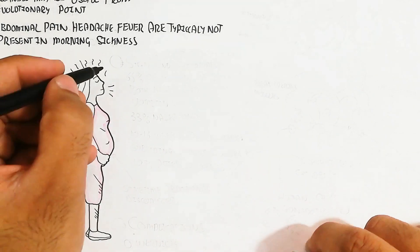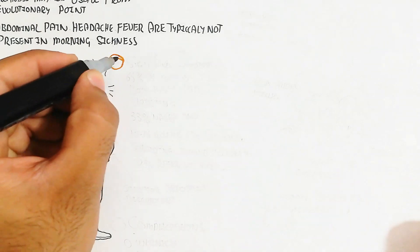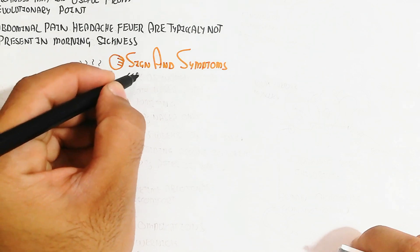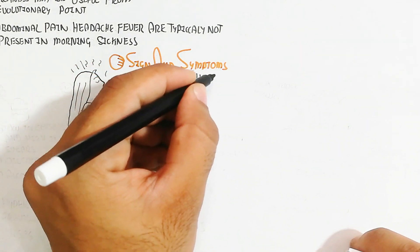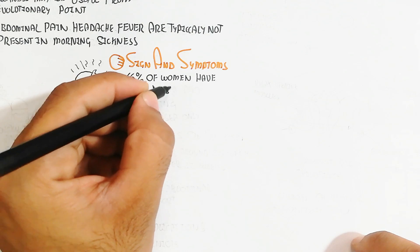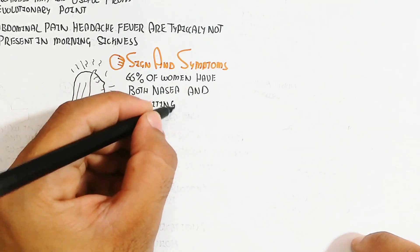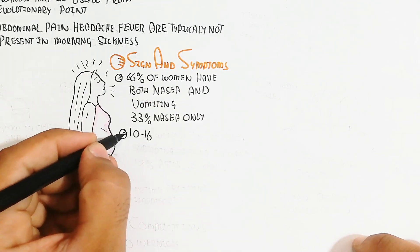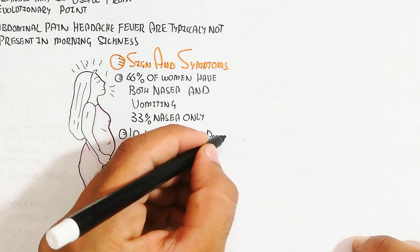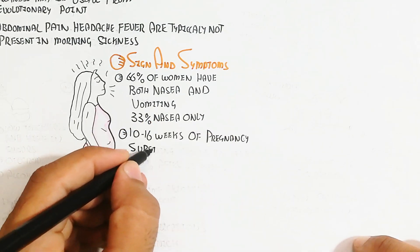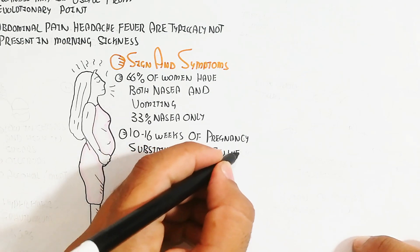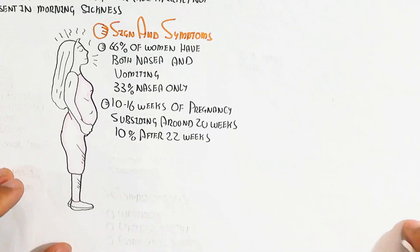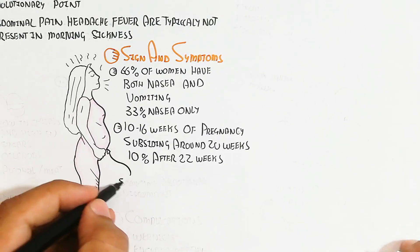The signs and symptoms: 66 percent of women have both nausea and vomiting, while 33 percent have nausea only. Symptoms occur during 10 to 16 weeks of pregnancy, subsiding around 20 weeks, and 10 percent continue after 22 weeks.